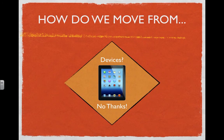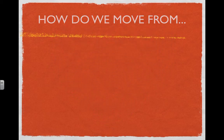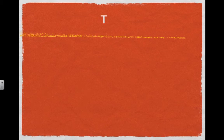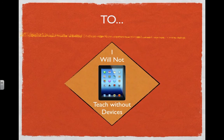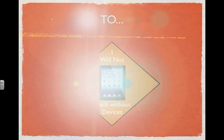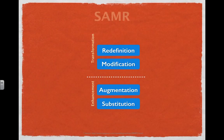How do we move from a place where devices are looked at negatively, are not wanted, and are not something we are familiar with in our classrooms, to a place where we will not teach without the devices? This is the point at which we introduce the SAMR model.